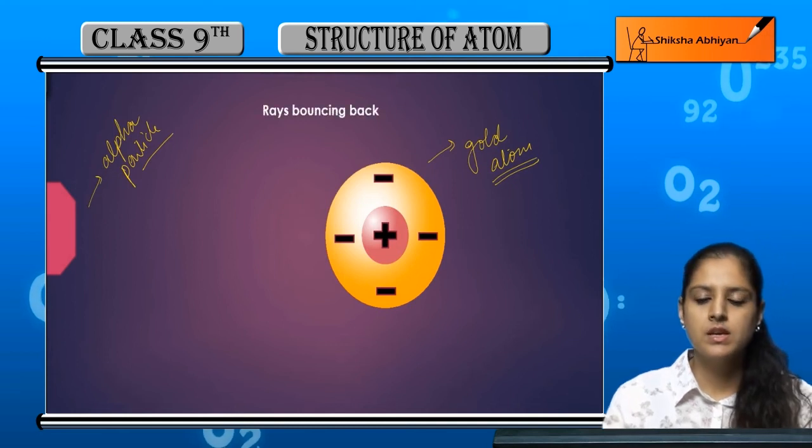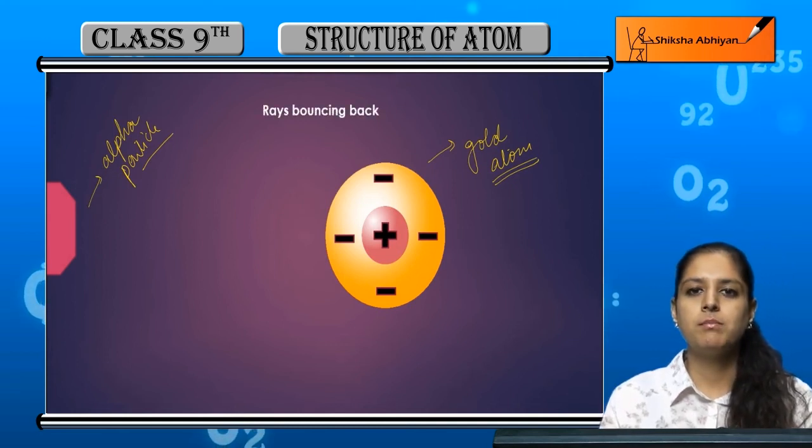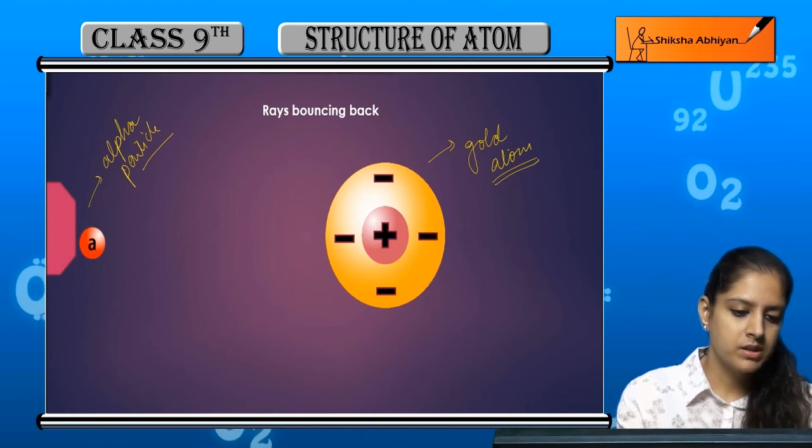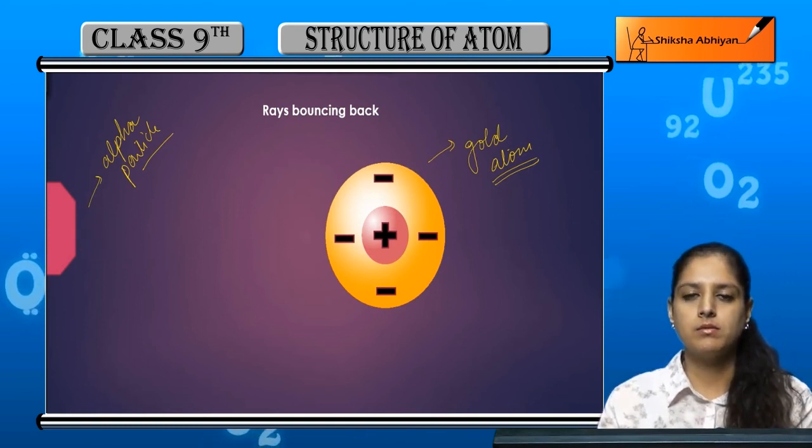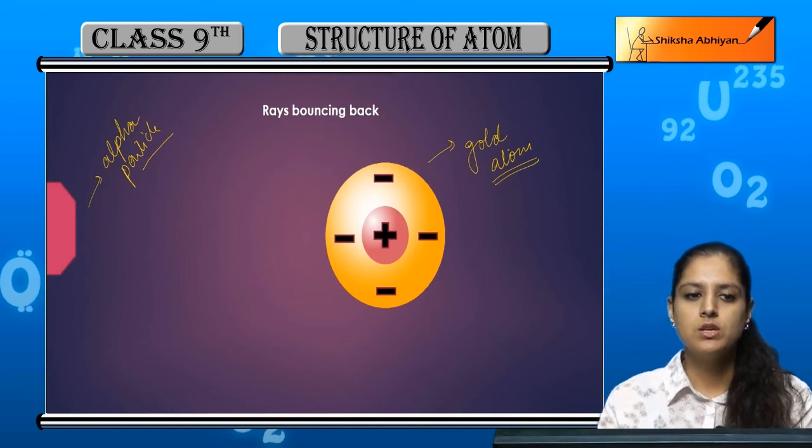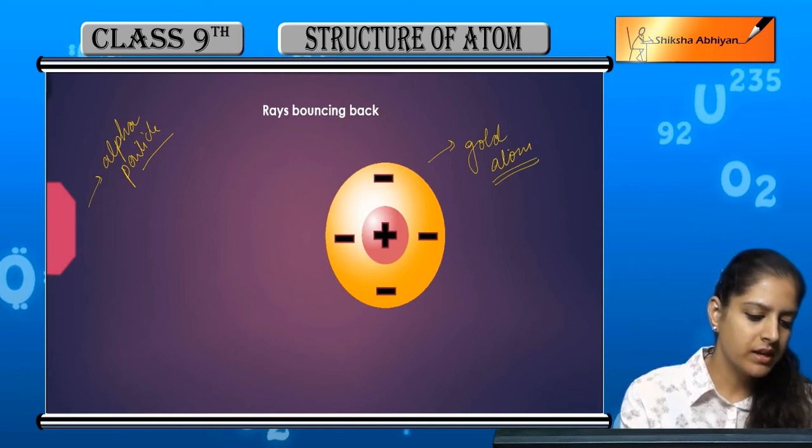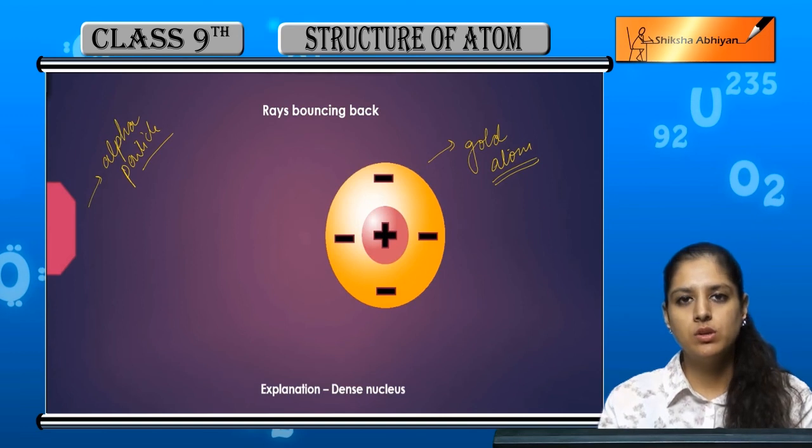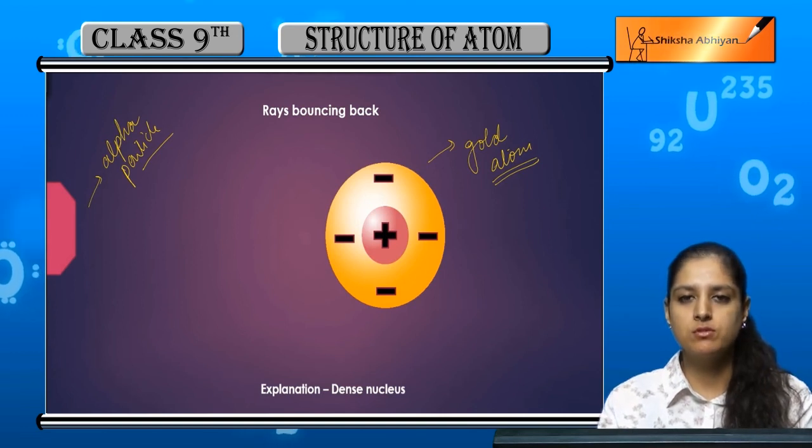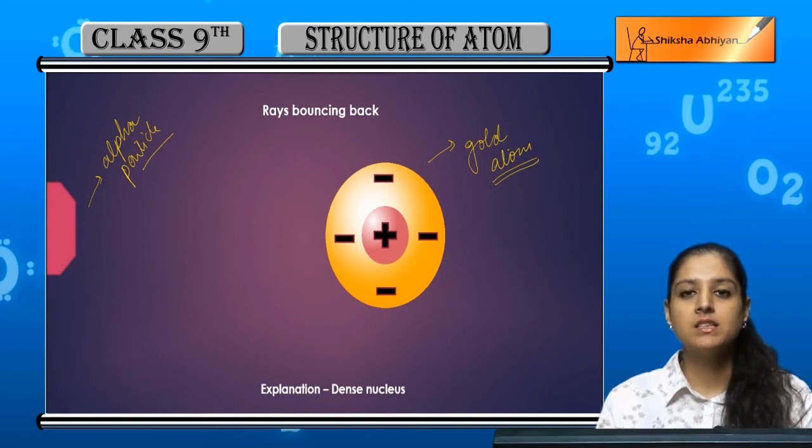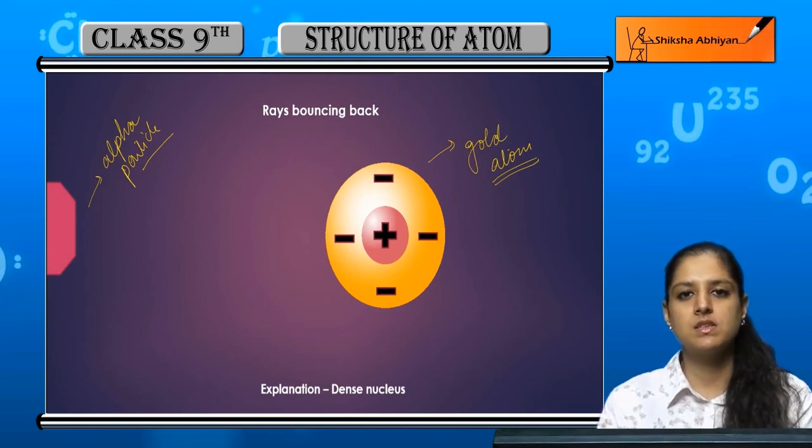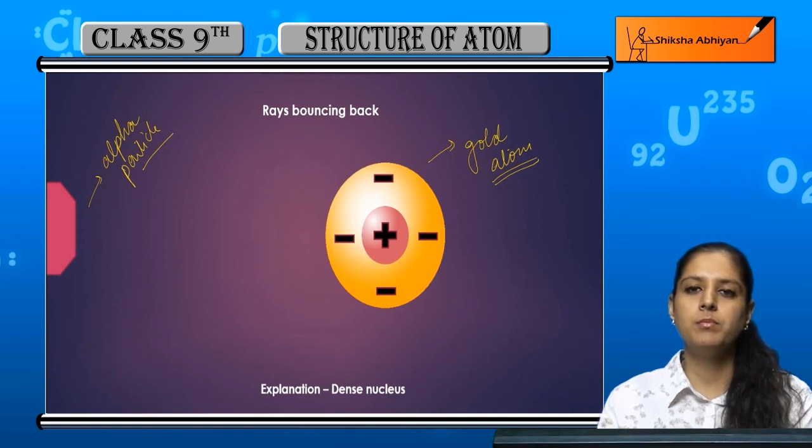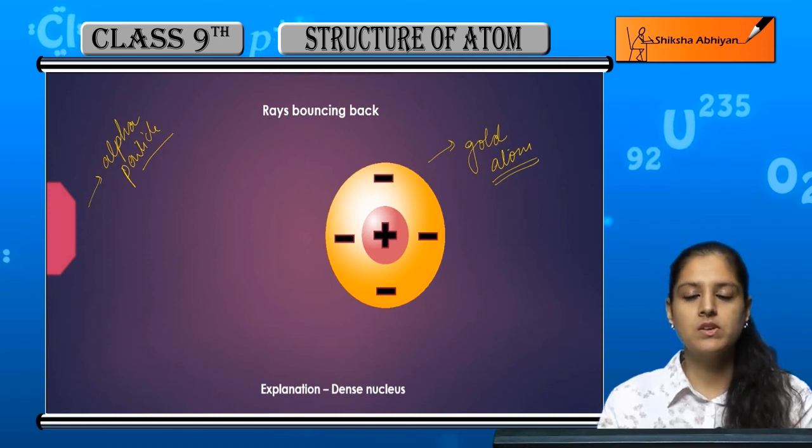The last type of deflection is rays bouncing back. The alpha particle we sent bounced back completely. The reason behind it is that it hit exactly on the nucleus or the positive center, and the positive center is very dense, which is why it reflected back.